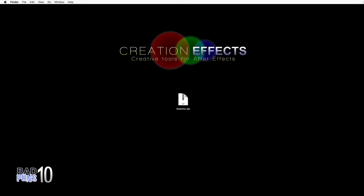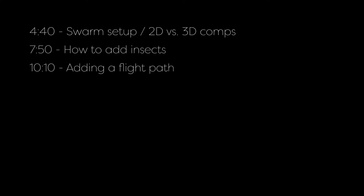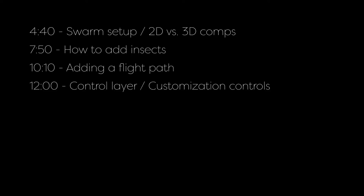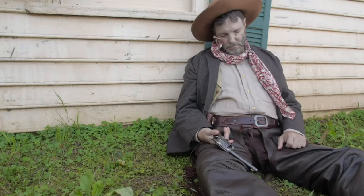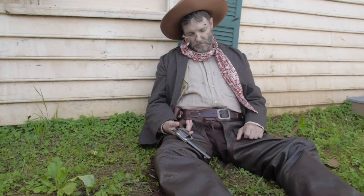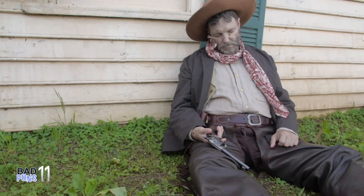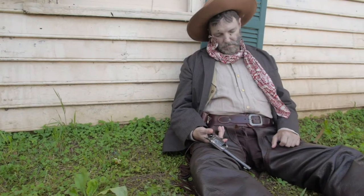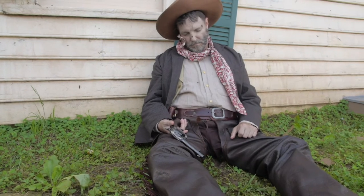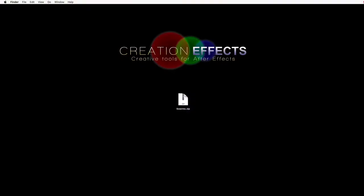I'm going to fly through this because there's a lot to cover. First I'll talk about how the insects and swarms are built and the difference between the 2D comps and the 3D comps, then how to add insects to your swarms, then how to make the swarm fly where you want, then all the customization controls for flight behavior, then some miscellaneous tips, and I'll end by explaining a few things about the fireflies. There's also a second tutorial on compositing swarms onto footage and making insects land — you'll find a link to that on the swarms web page.